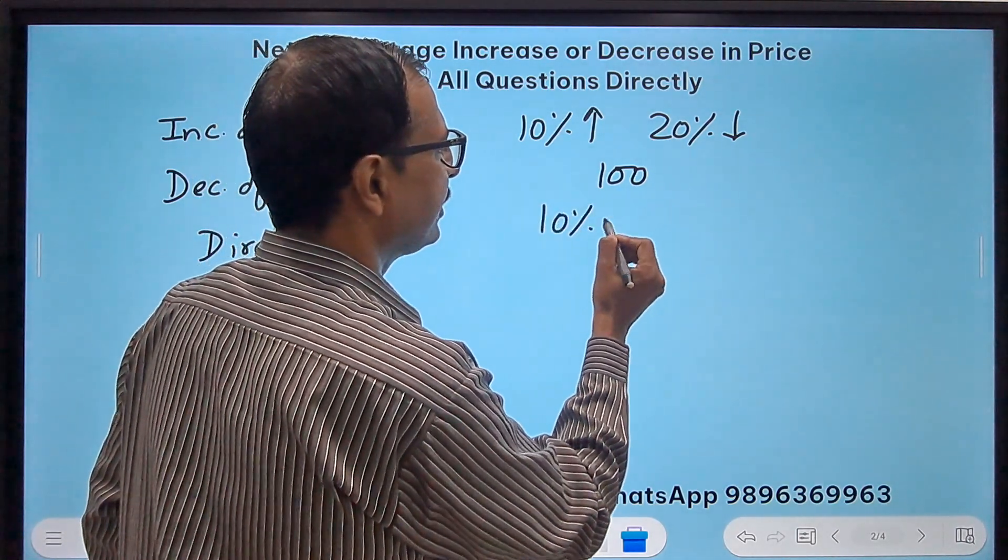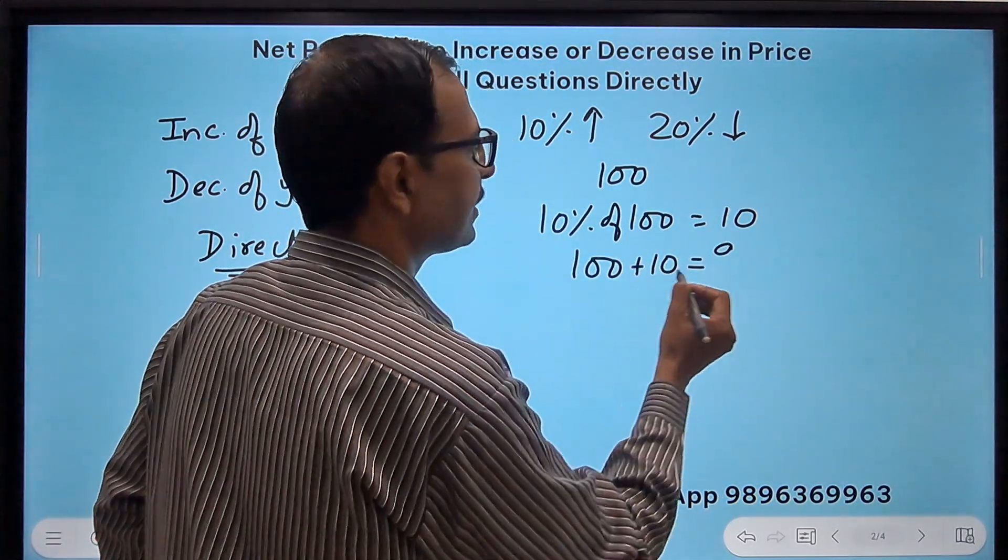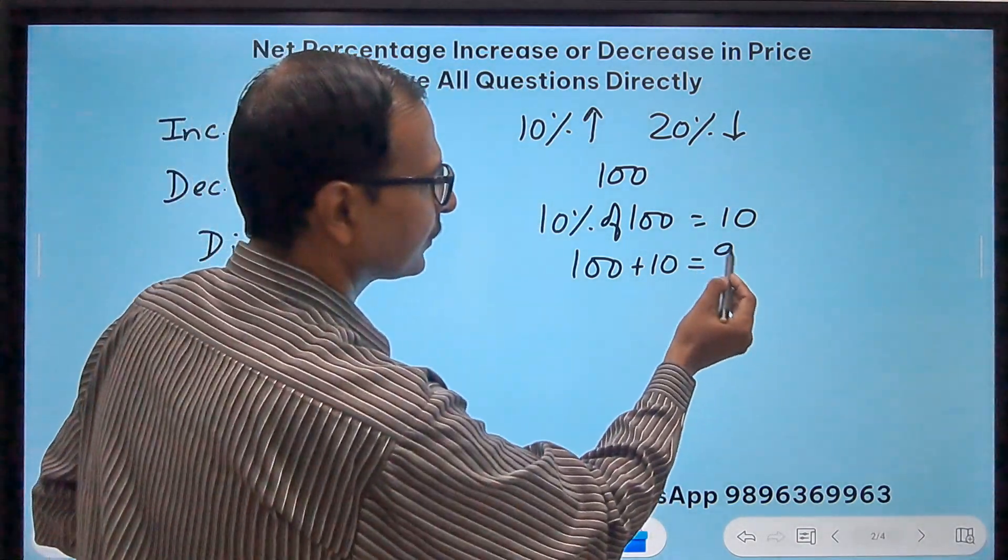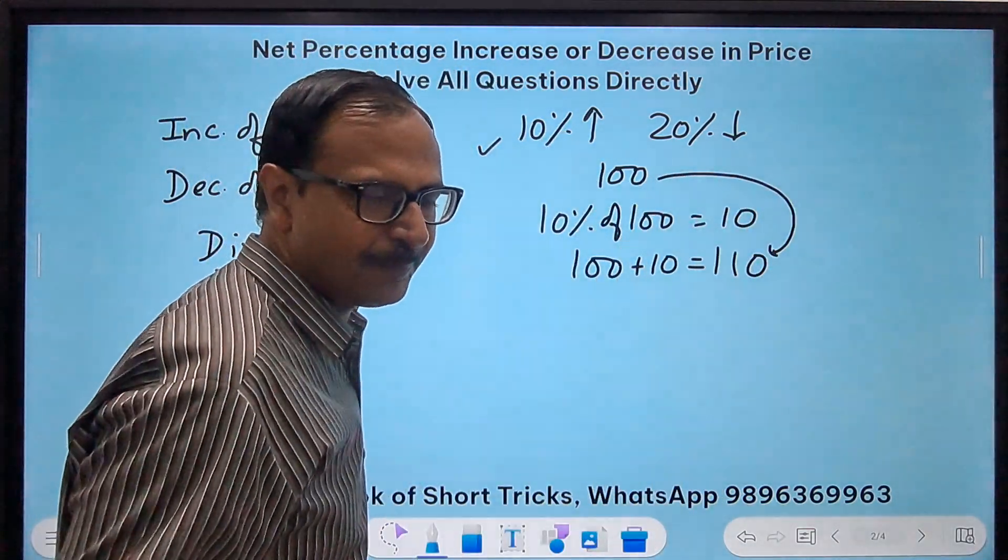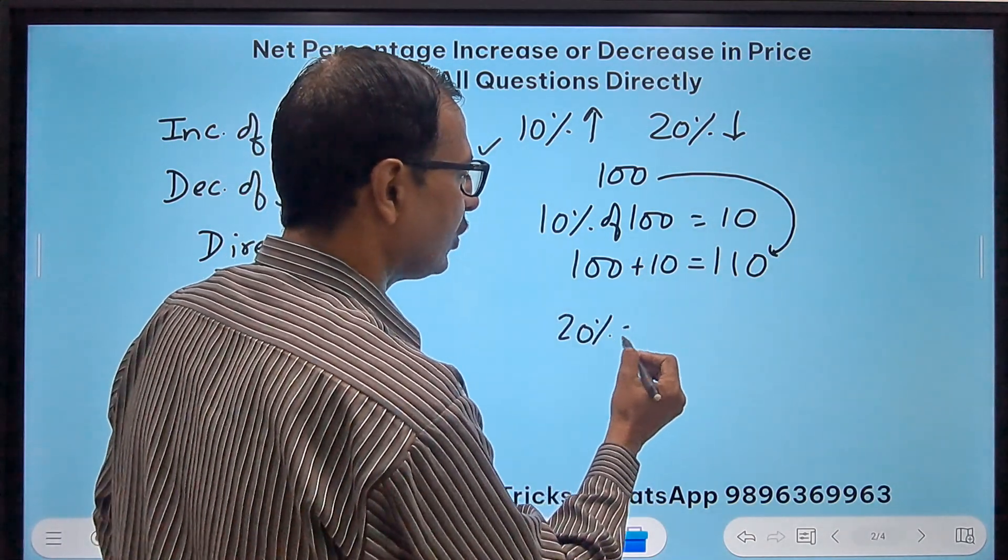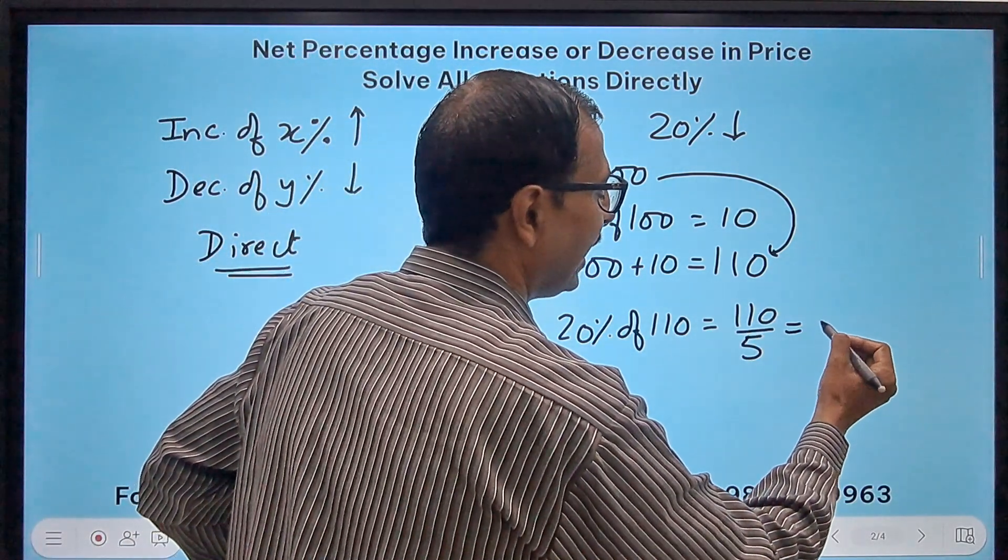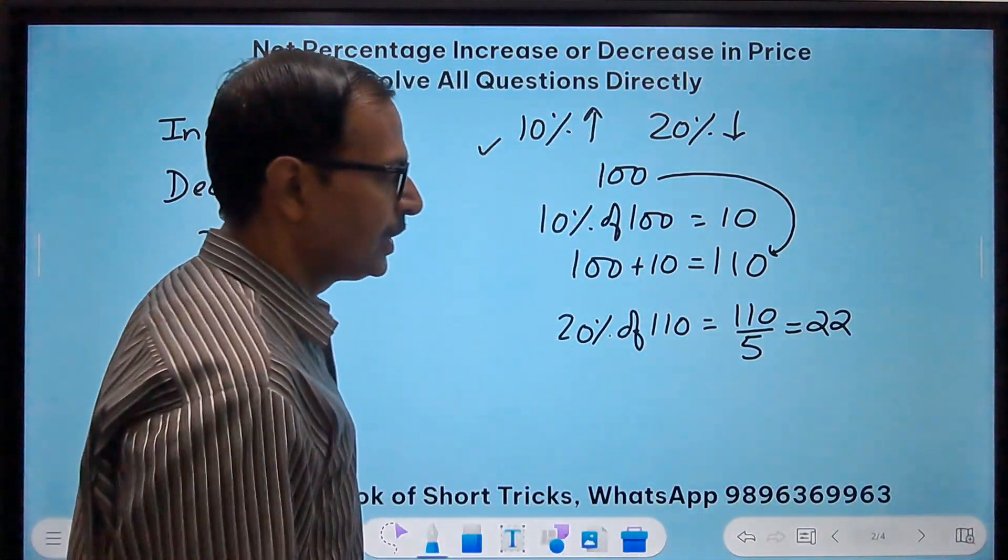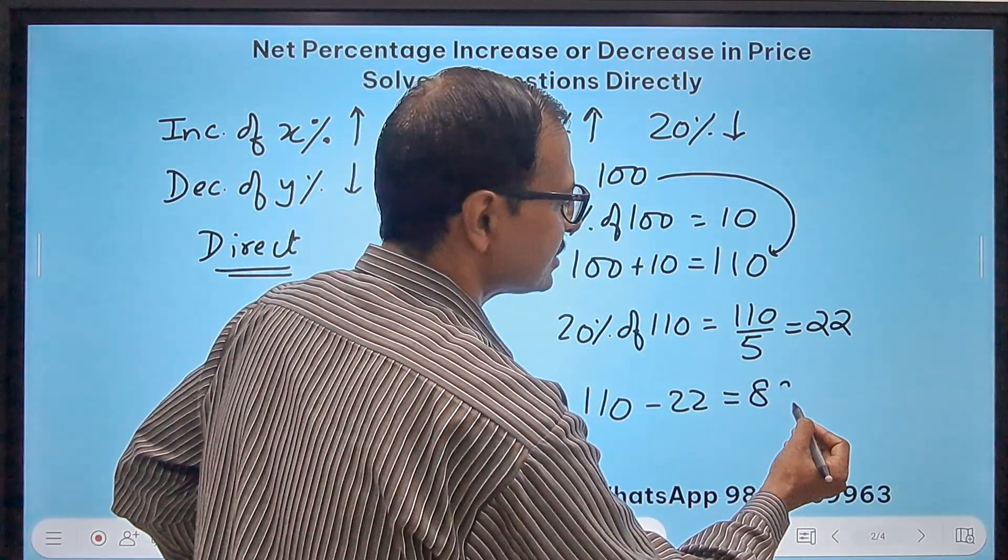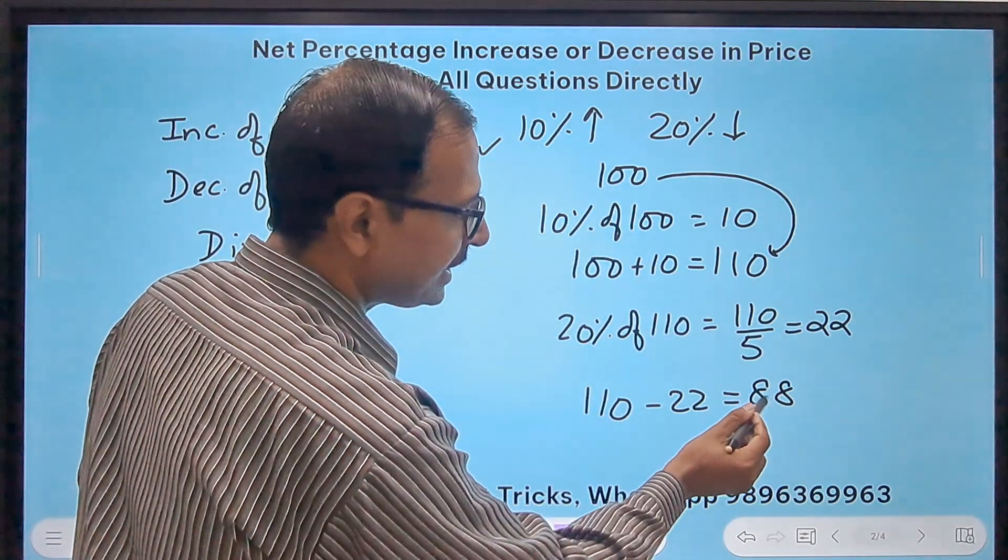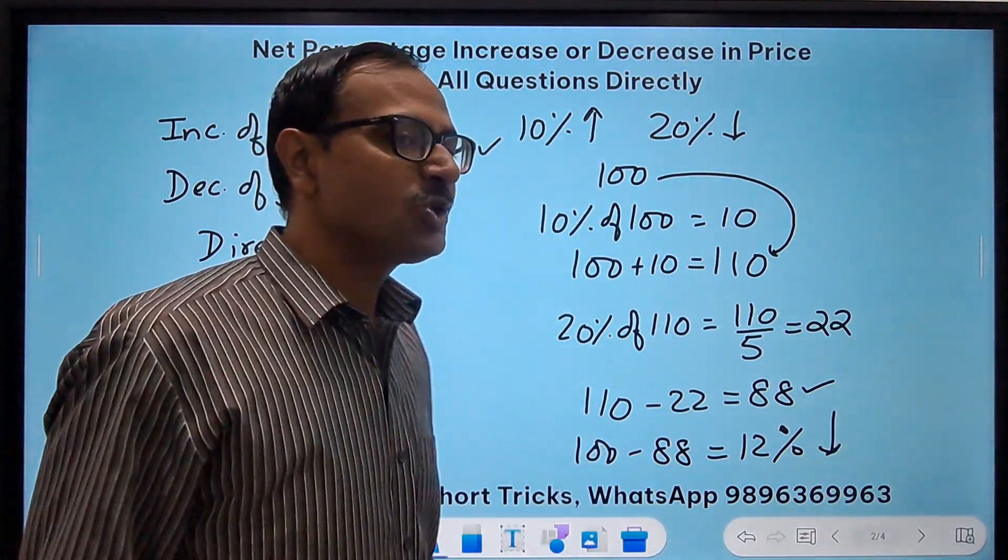If I assume the original price as 100, then 10 percent of 100 will be 10, so the price will become 110. After the first increase of 10 percent, 100 becomes 110. Now 20 percent decrease. You will find 20 percent of 110. Even if you are really quick, 20 percent is one fifth, so you divide by 5 and get 22. So what is the new price? 110 minus 22 gives us 88. So 100 becomes 88, so 100 minus 88 is 12 percent, and since it became 88, it is 12 percent decrease. This is what we do traditionally.